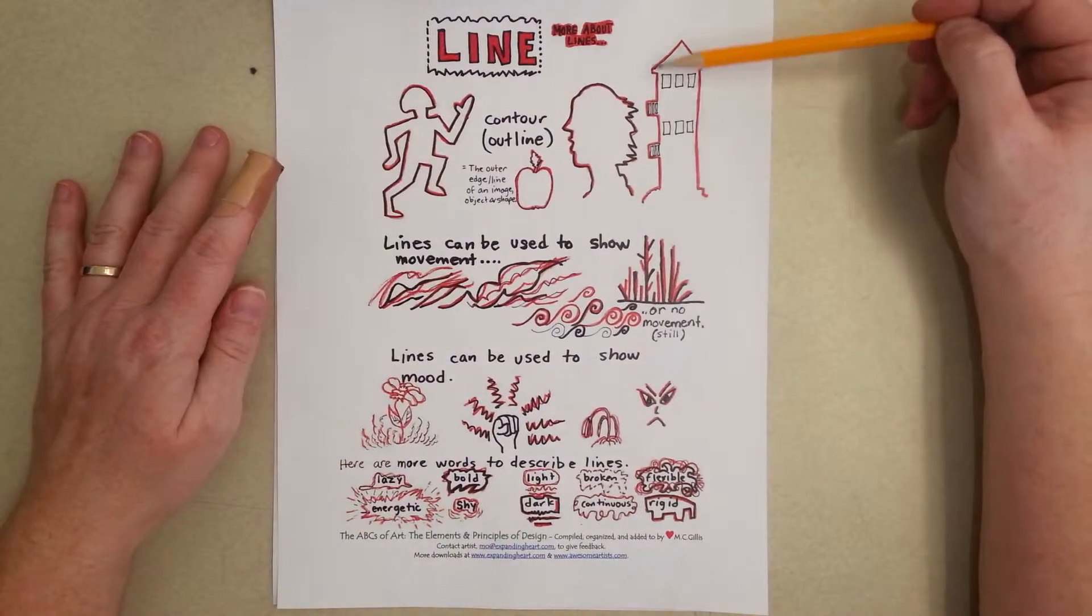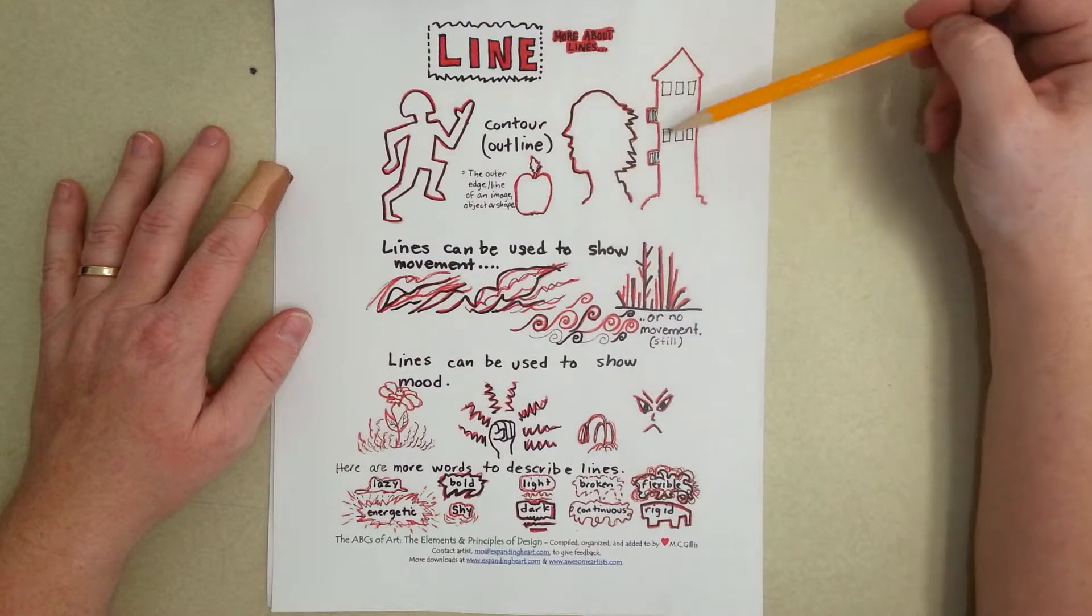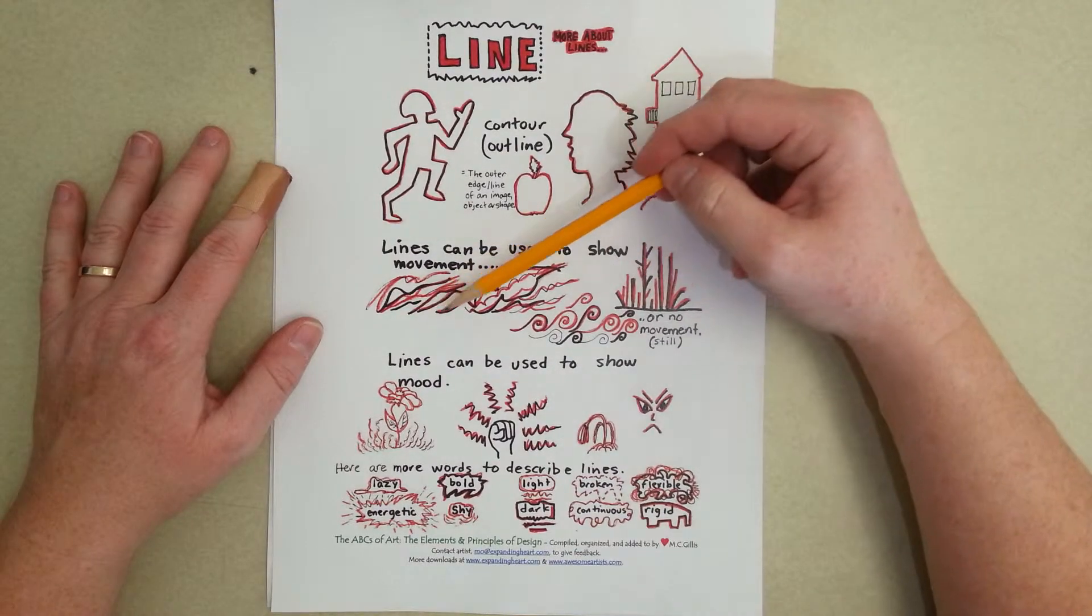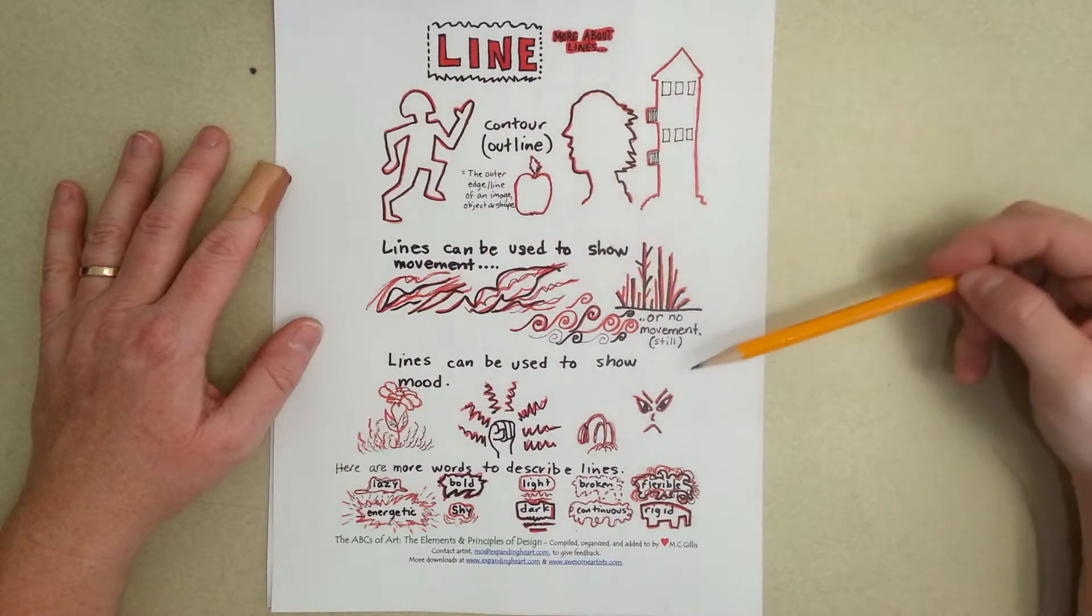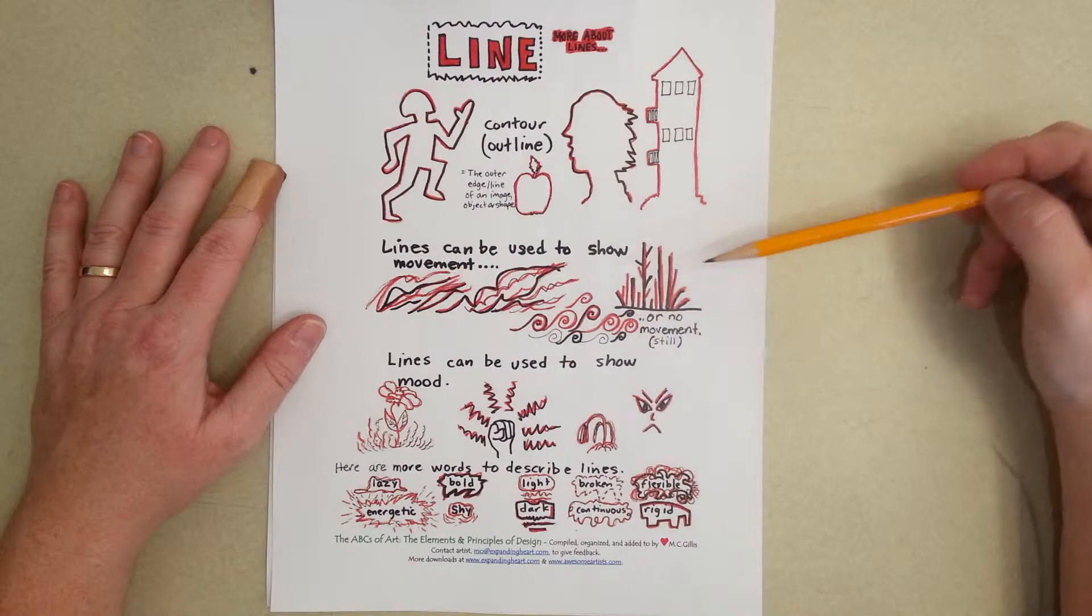Like I said before, we did contour line drawings with our shoes, so that's like the outline. Lines can be used to show movement, so it kind of looks like waves crashing, or no movement, like plants that are standing still without wind.